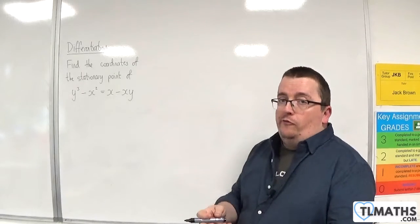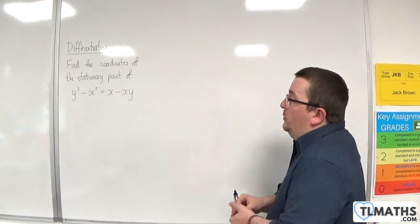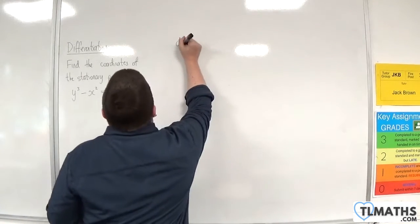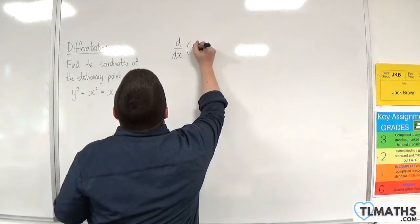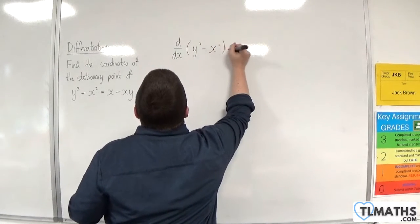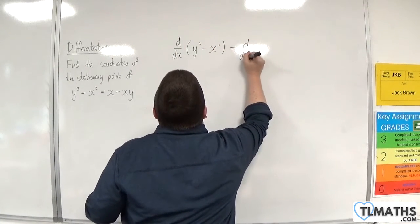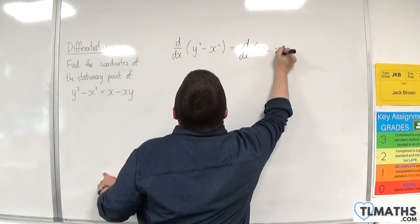So the first thing we need to do is differentiate both sides with respect to x. So d/dx of (y³ - x²) is going to be equal to d/dx of (x - xy).